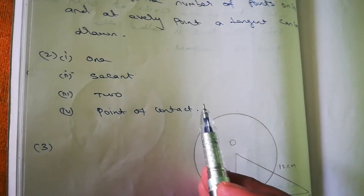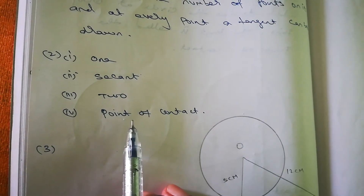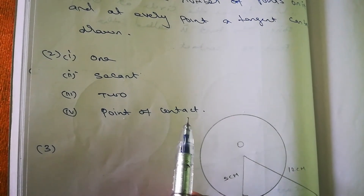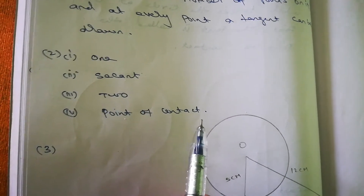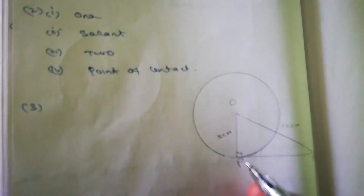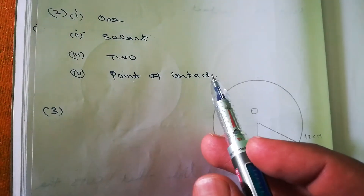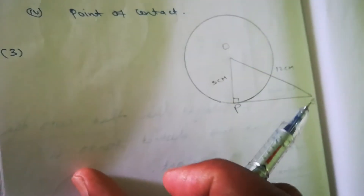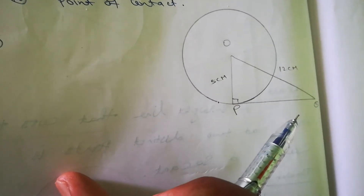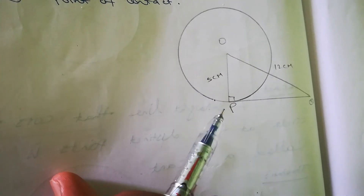Third blank: a circle can have at most two parallel tangents. And the last blank: the common point of a tangent to a circle and the circle is called the point of contact. Now question number 3: tangent PQ at point P of a circle with radius 5 cm.